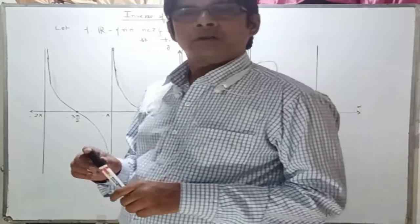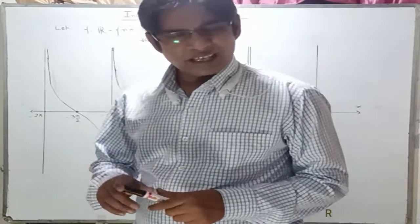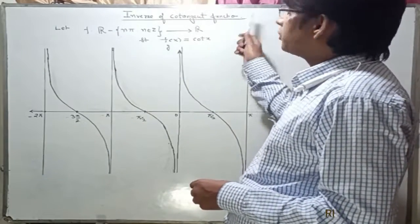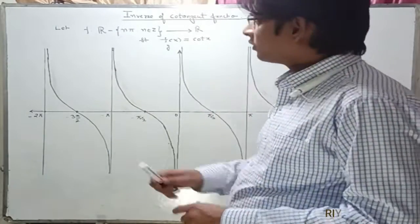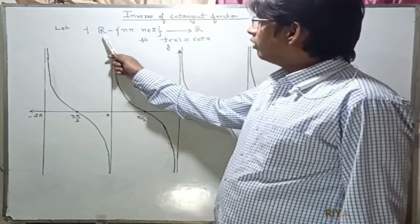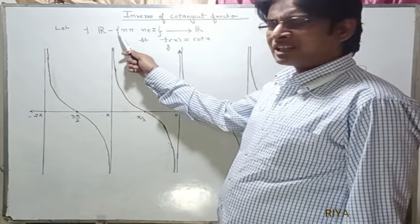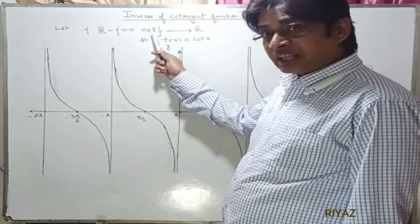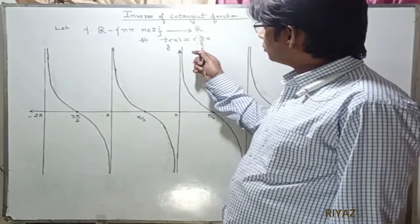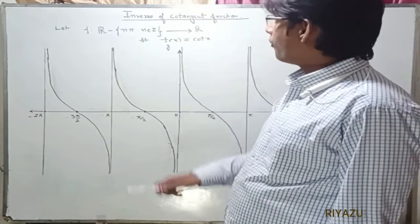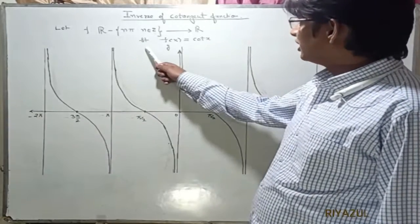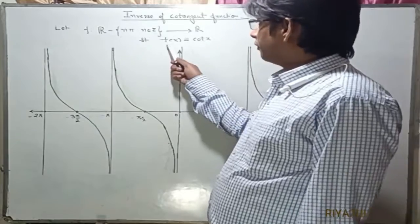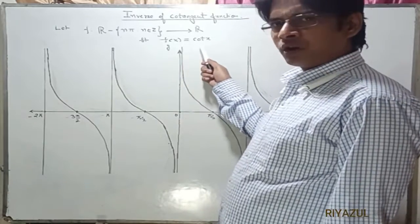Hello friends. In this lecture we discuss the inverse of the cotangent function. Let f map all real numbers except nπ (where n belongs to integers) to all real numbers, such that f(x) is equal to cot x.